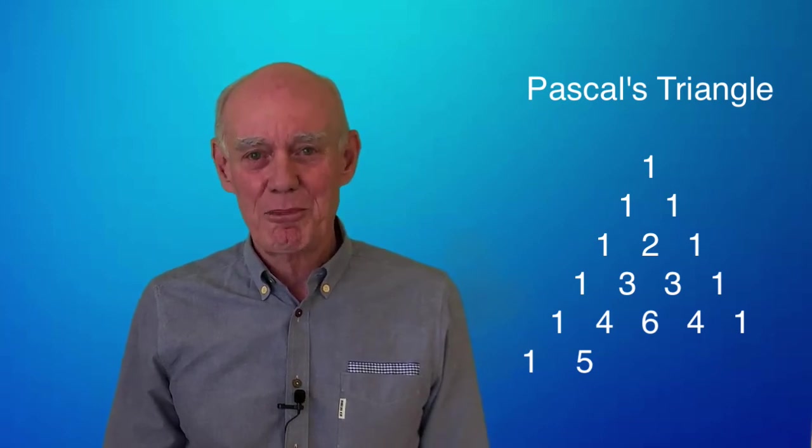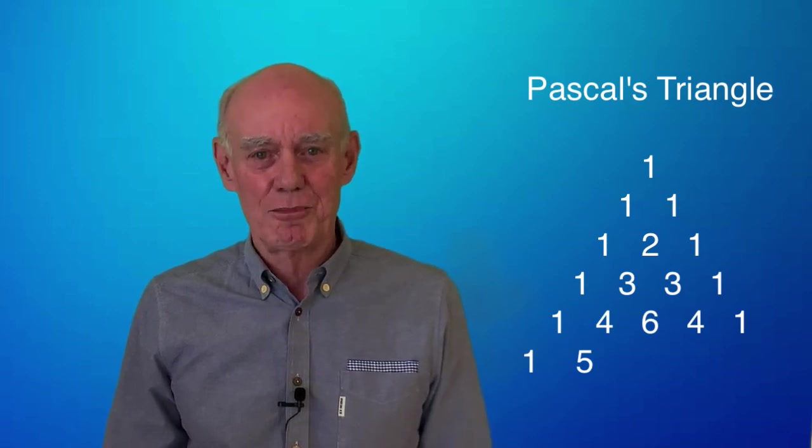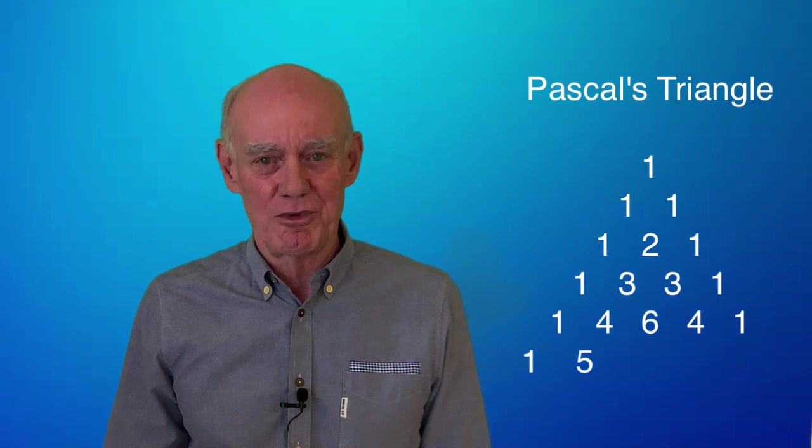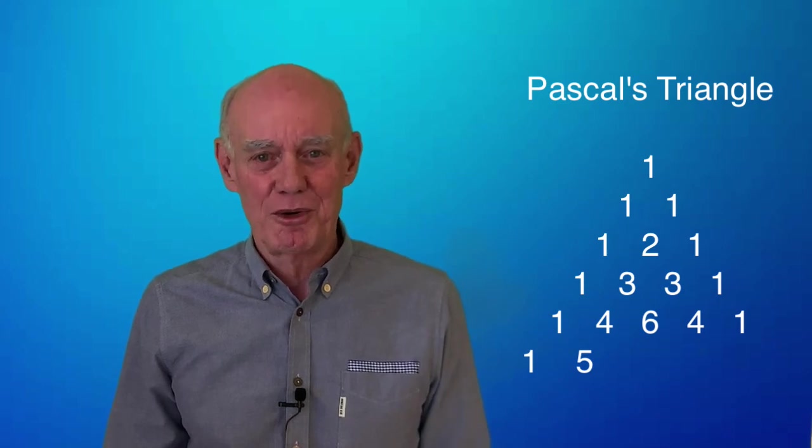So get a pencil and paper, write down the first five rows, and then really look around for the relationship that will allow you to complete the last row. We'll start the next video with Pascal's Triangle. See you then.